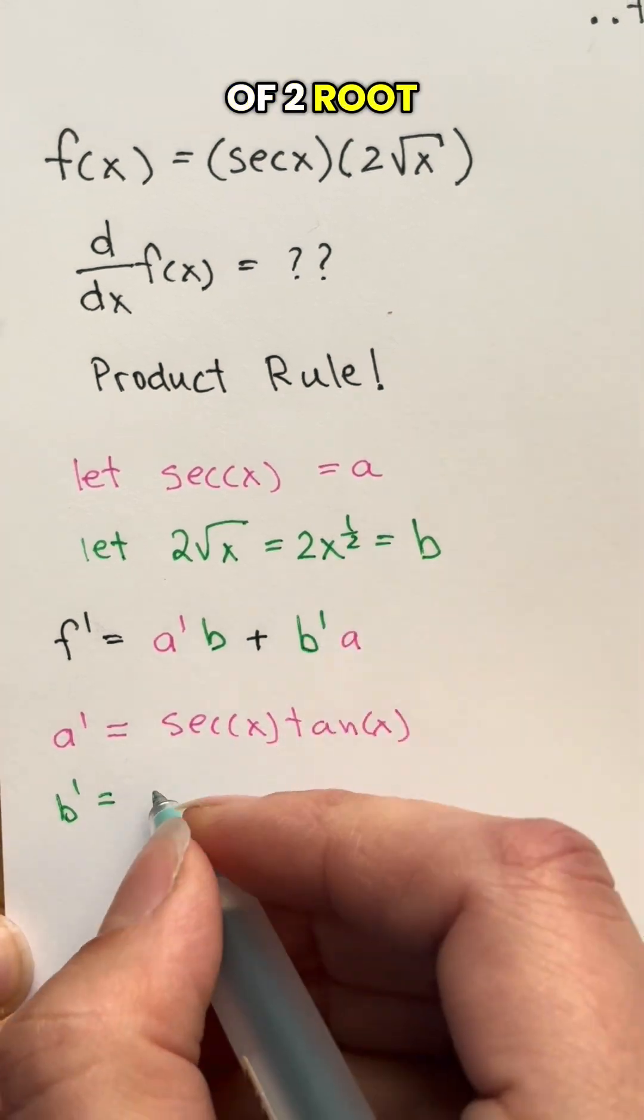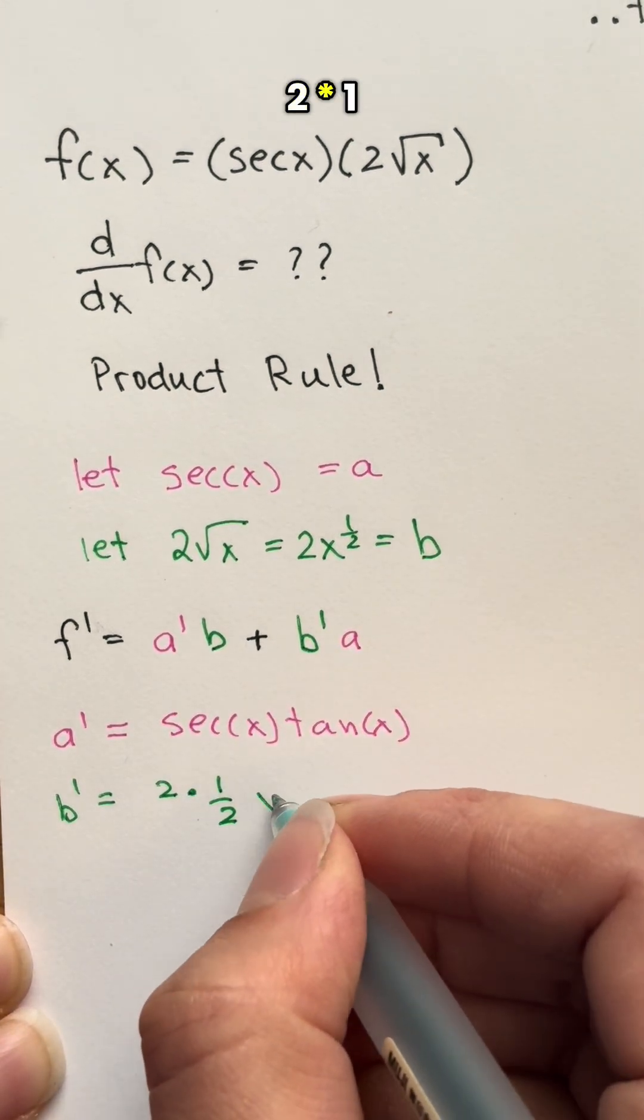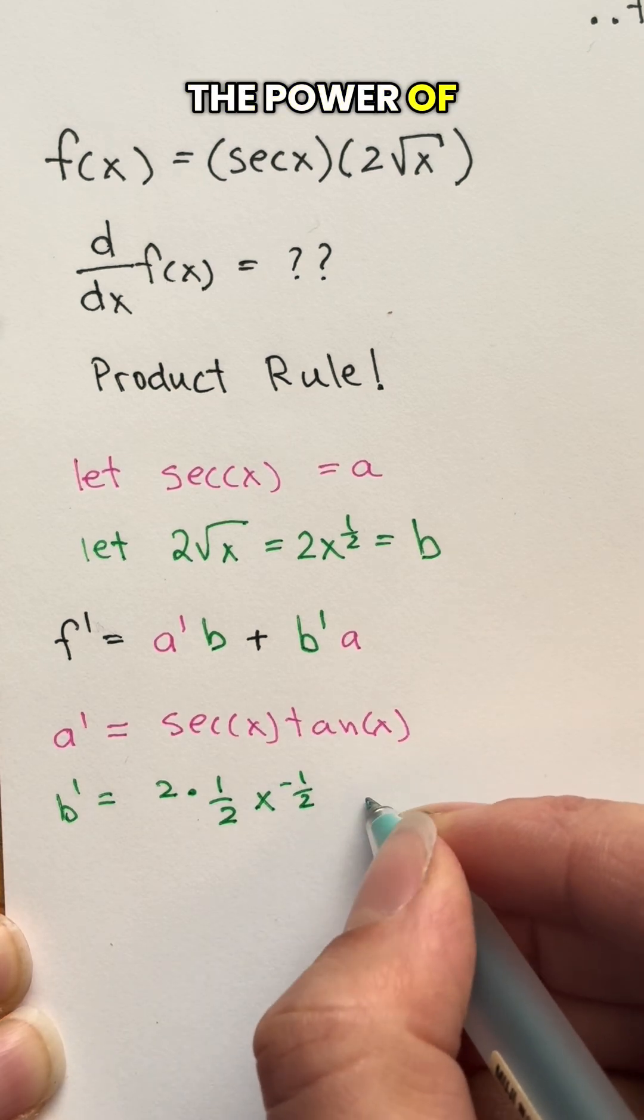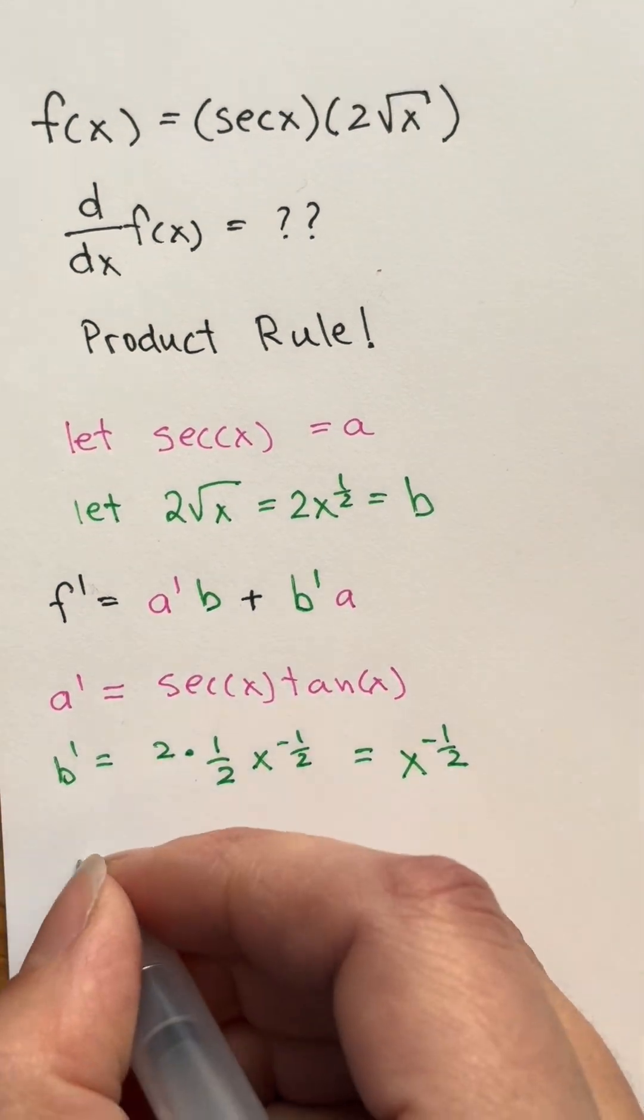And the derivative of 2 root x equals 2 times 1 over 2x to the power of negative 1 over 2 by power rule.